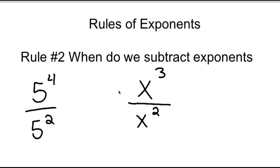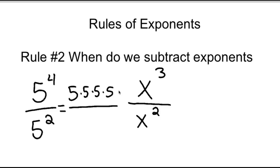First off, if you don't know anything about the rules of exponents, you could just use the fact that 5 to the fourth is 5 times 5 times 5 times 5, and 5 squared is 5 times 5.